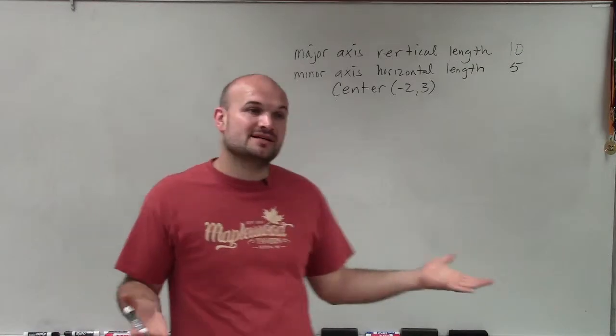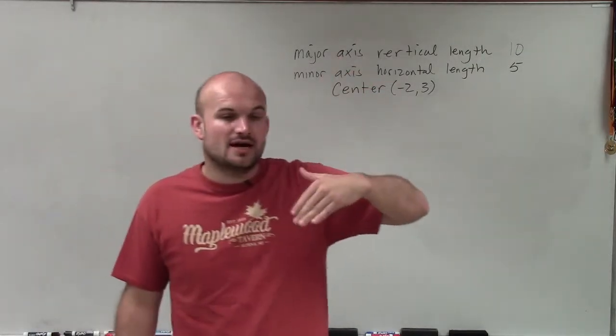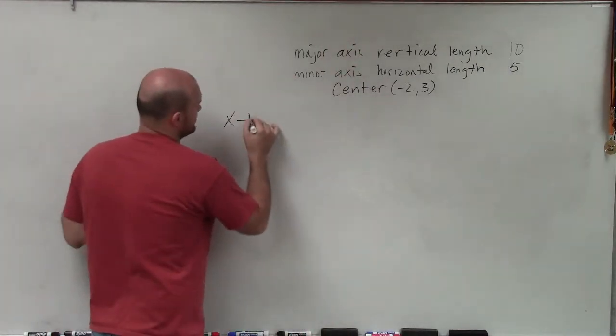This is very important because we now know where the major axis and the horizontal axis are. The major axis is vertical, so therefore I know the equation of my ellipse is going to look like this.